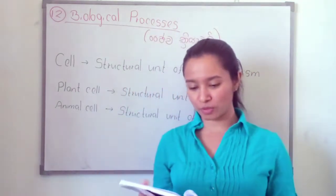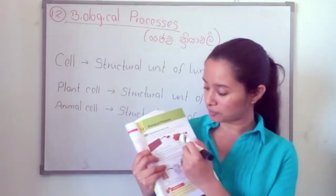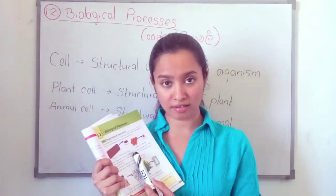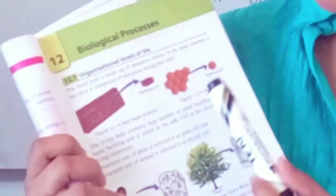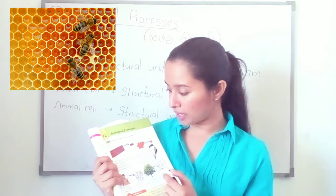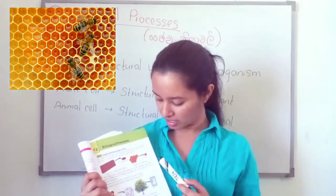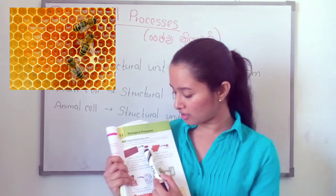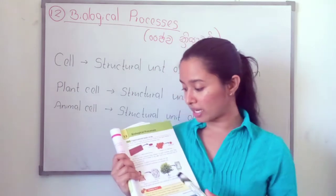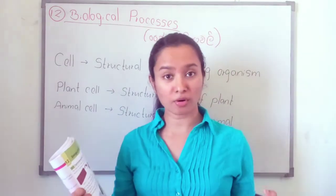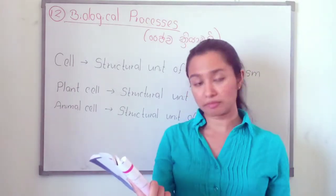Turn to page number 11 in your textbook. You can see two pictures here. The first one is a wall — this wall is made up of numerous bricks. And also here, this is a beehive. The beehive is also made up of numerous hexagonal units. The building unit is a hexagonal unit. In the same way, think about our body — our body is also made up of a large number of building units.